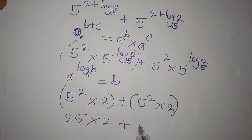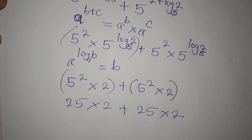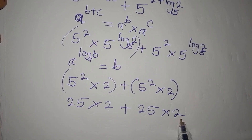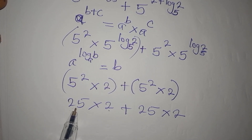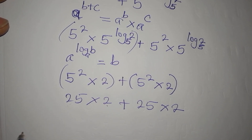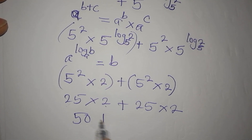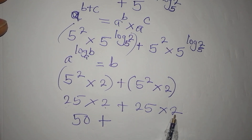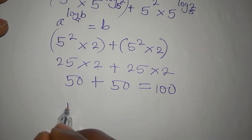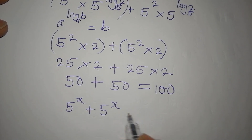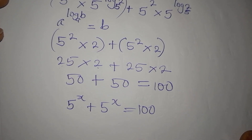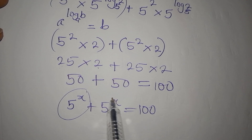So we have 25 times 2 plus 25 times 2. Note that we must follow the correct order of operations — multiplication before addition. 25 times 2 is 50, and 25 times 2 is another 50, so 50 plus 50 equals 100. The equation was 5 to the power of x plus 5 to the power of x equals 100, and we get exactly 100, confirming that x equals 2 plus log 2 to base 5 is correct.